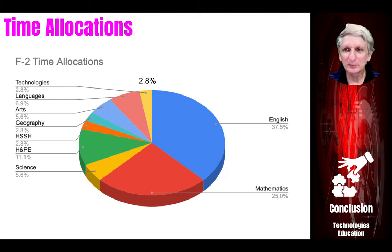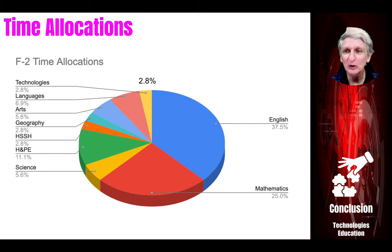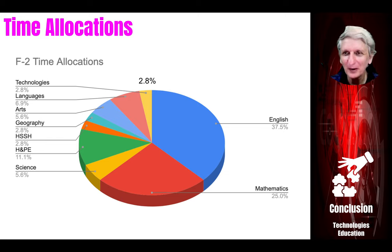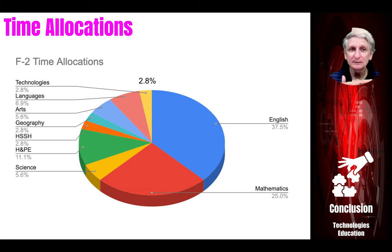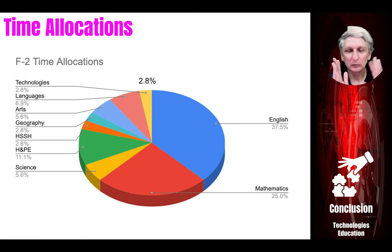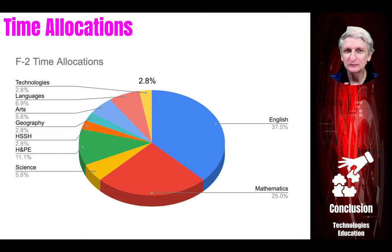Let's get into the final aspects of implementation of the technologies learning area in schools. Much of this will be decided by your principal and by the leadership team, or by the whole school coming together to decide upon priority areas and where things will be allocated. In general, digital technologies in F–2 should have at least almost 3% of curriculum time. There's still about 25% of discretionary time that can be allocated to any subject, so if technologies were seen as a priority area, some of that block could be allocated to double, triple, or quadruple the expected minimum time for teaching technologies education — including both design technology and digital technologies.